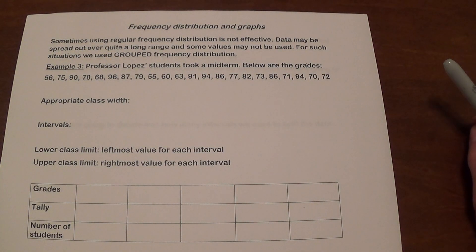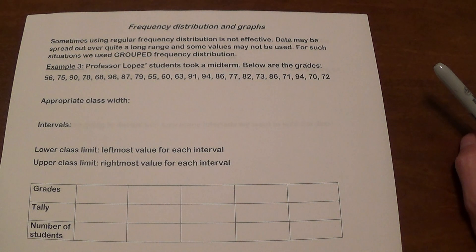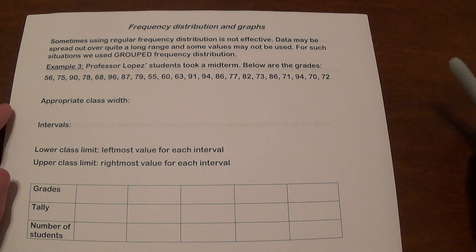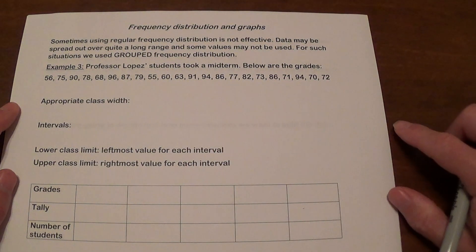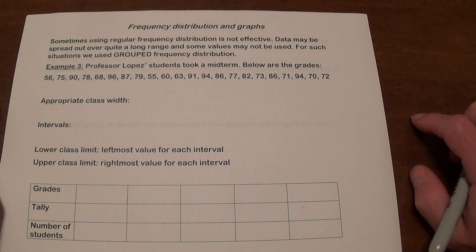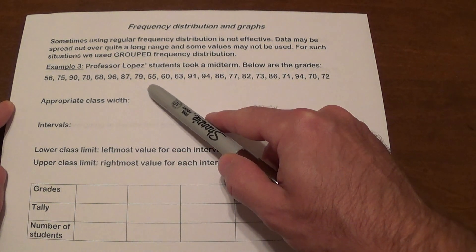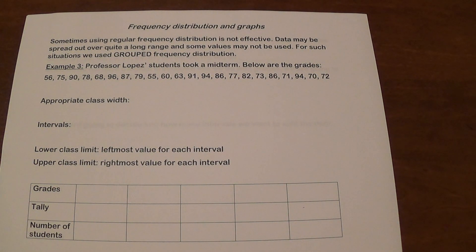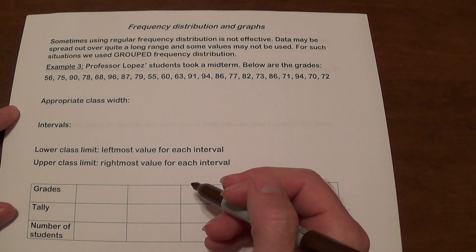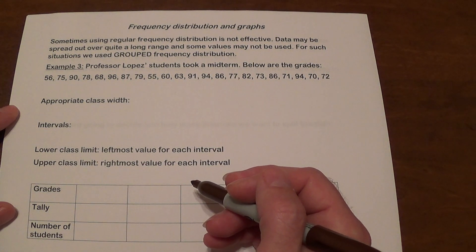Sometimes making frequency distribution by individual values is not going to be effective. You may have values spread out quite a bit and values some of the values may be not there and for that we use what's called grouped frequency distribution. So professor Lopez's students took a midterm below the grades. That would be a very good example because our grades range from 55 to 96 I believe and it's difficult to plot it all. So what we normally do with things like this we create a sort of class width.